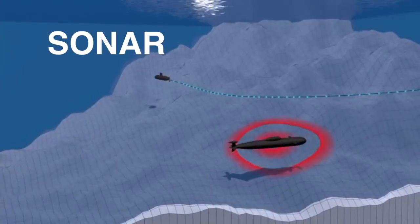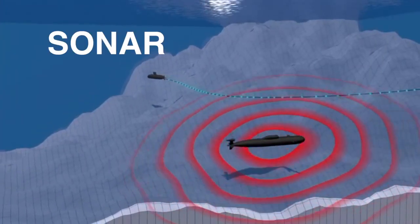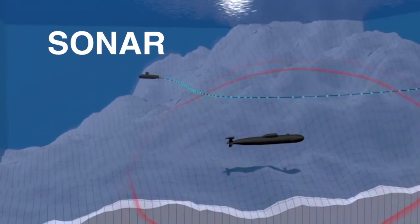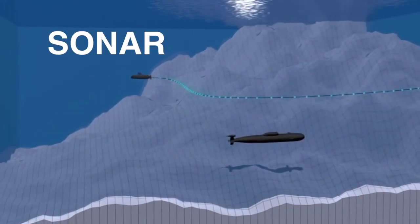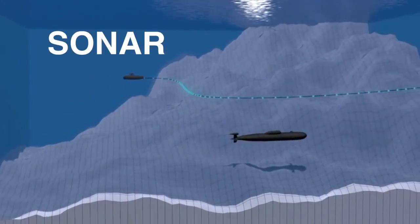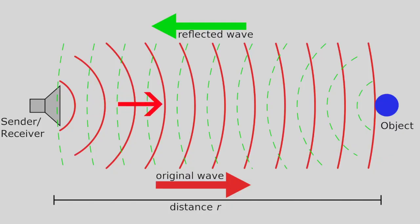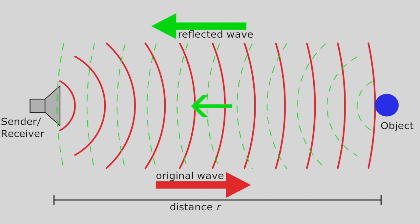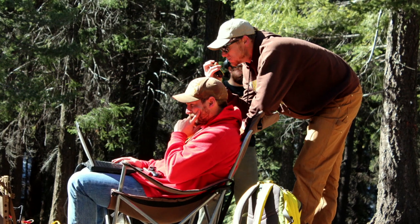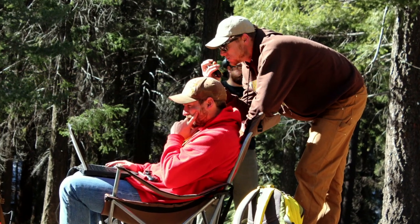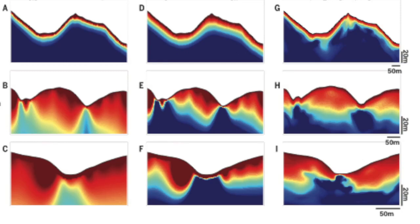You've probably heard of sonar, the system used by submarines to see underwater. Sonar is a very similar technique. A transmitter sends out waves, and then sensors measure when and how the waves bounce back so that the operator can see the shape of the land or other objects.